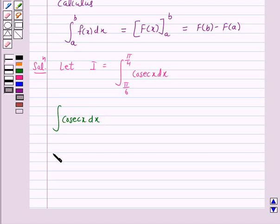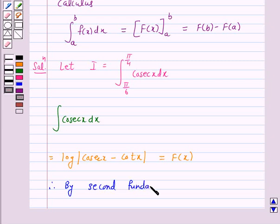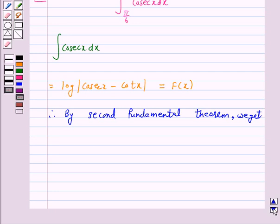And we know that the integral of cosecant x dx is equal to log of |cosecant x - cot x|. So this is our F(x), that is, the antiderivative of cosecant x. Therefore, by the Second Fundamental Theorem,